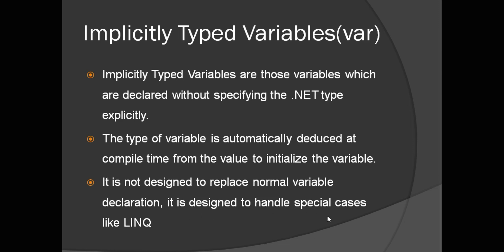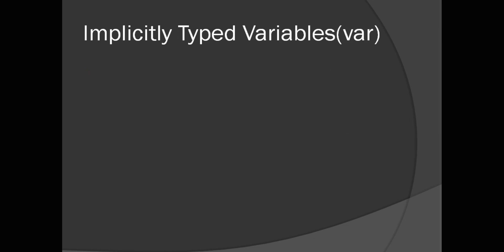Implicitly typed variables are specifically designed to handle special cases like LINQ. Many times in LINQ, we cannot decide the data types or the output type given by the LINQ query. In those cases, implicitly typed variables are very helpful.